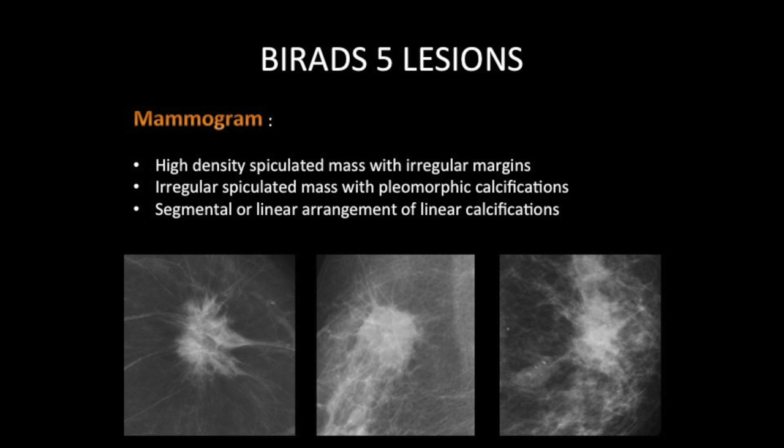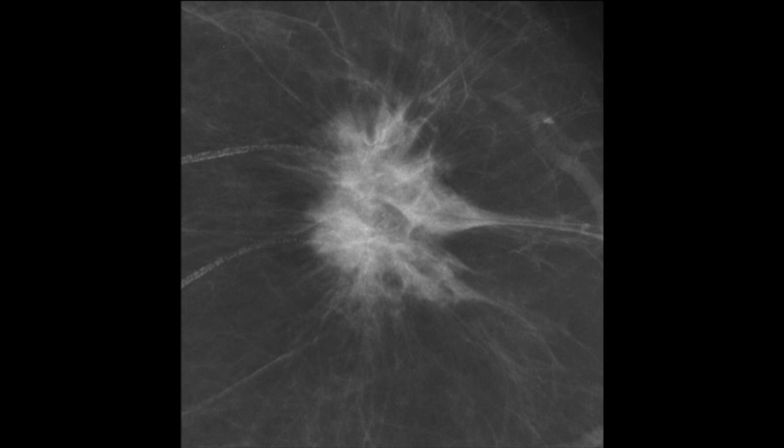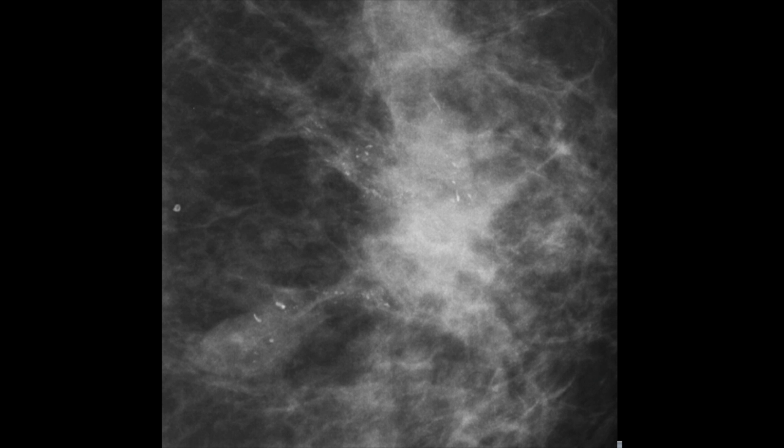On a mammogram, if you see a high density spiculated mass with irregular margins, or an irregular spiculated mass with pleomorphic calcification, or segmental or linear arrangement of linear calcifications, then you should think of a BIRADS-5 lesion.